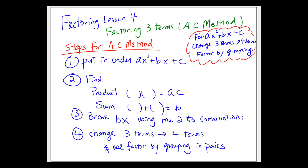Here are the steps for AC method. First, we need to make sure your expression or equation is in order: AX squared plus BX plus C form. After that, we need to find two numbers so we can break the middle term into two terms. These two numbers need to multiply together to give a product equal to A times C, and when you add the two numbers together, the sum needs to equal B. After you get the two numbers, go back to the original question and break BX into two terms using those two numbers. This changes a three-term question to a four-term question, and you can factor a four-term question by grouping them in pairs.